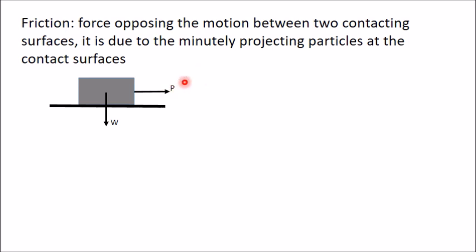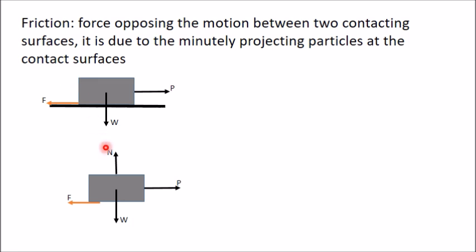A force will come between these two surfaces and that force is called friction force, which will oppose force P and try to keep this block in equilibrium. So there will be a friction force F acting towards the left side to keep this block at rest. In the free body diagram of this block, there is a normal reaction between the surface and block, weight acting vertically downward, force P, and opposing friction force F.